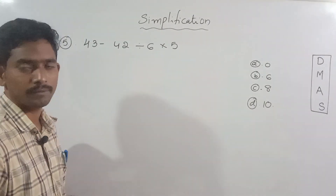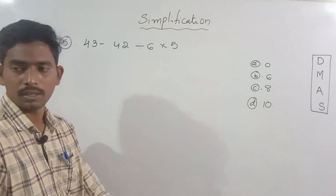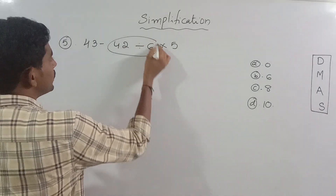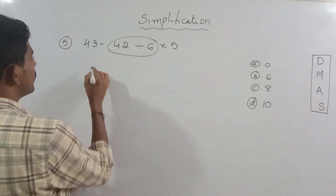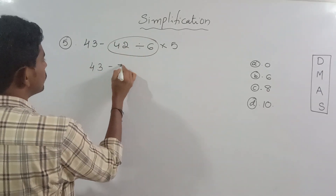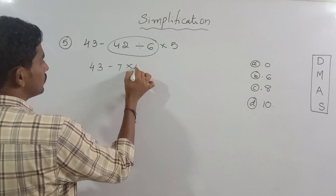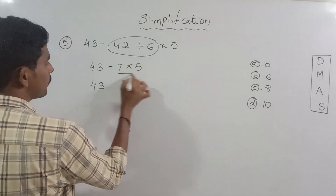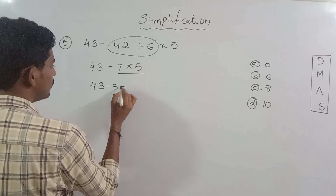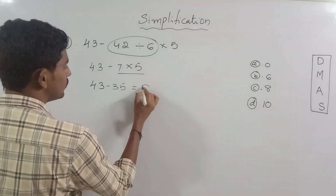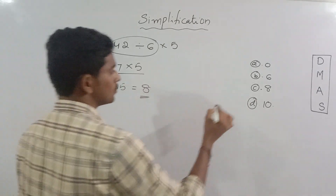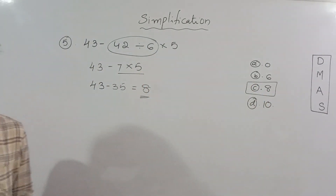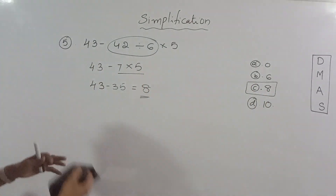Okay, look at the fifth sum: 43 minus 42 is divided by 6 into 5. So first do division. 42 in the 6 table: 6 times 7 is 42. So 7 into 5 — next multiplication: 7 fives are 35. So 43 minus 35 equals 8. So 8 is the correct answer.